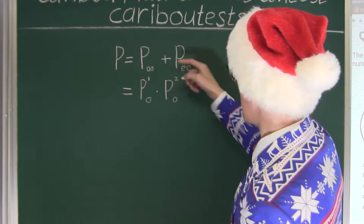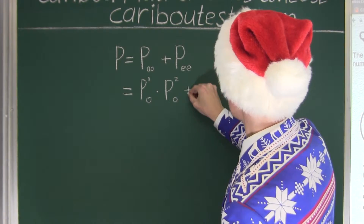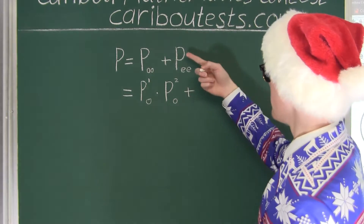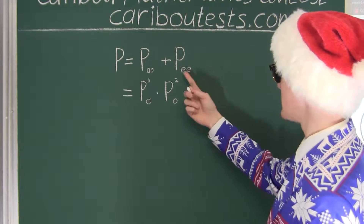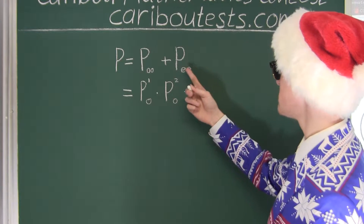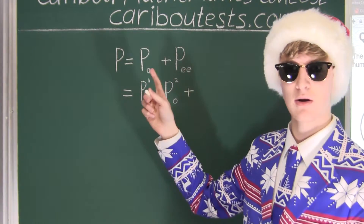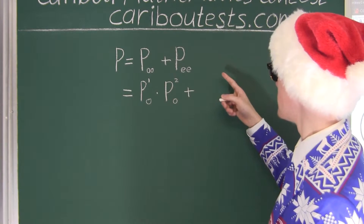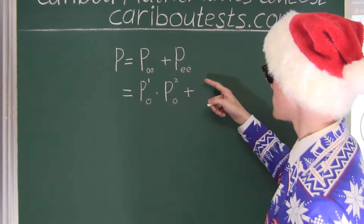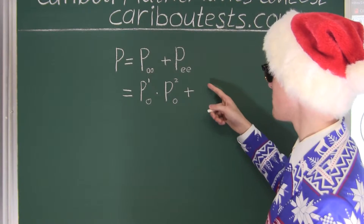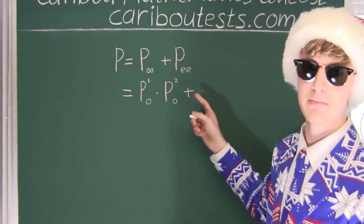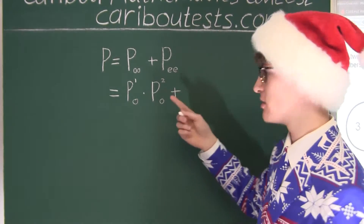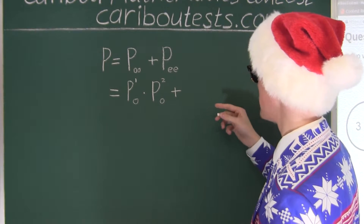And then we have plus the probability of spinning two even numbers, because again, both those events are independent from each other. So we would have the probability of the first spinner spinning an even number multiplied by the probability of the second spinner spinning an even number.